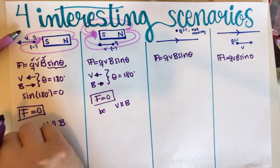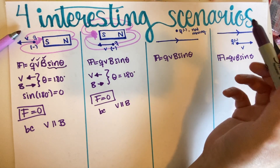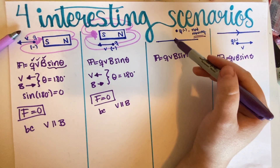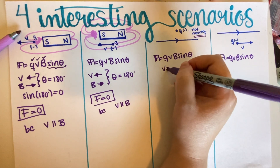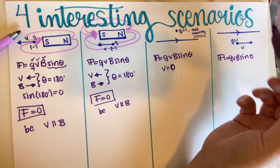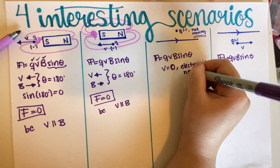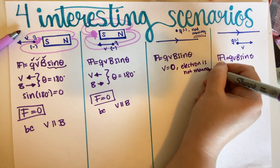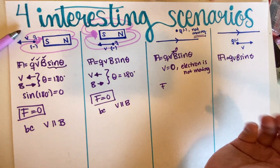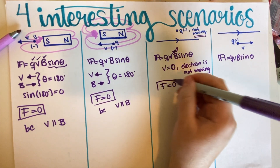For part C, instead of a magnet we have a wire. However, the electron is not moving, so regardless of the direction of B, the velocity is equal to zero. Since F = qvB sin(θ) is just a multiplication, if v is zero then the entire product is zero — so there is no force, period.